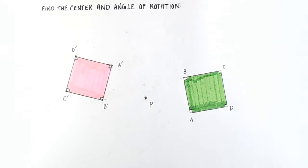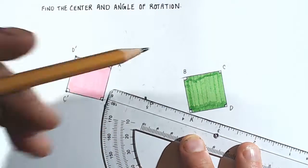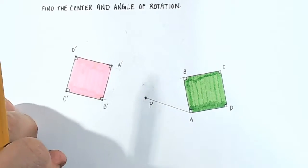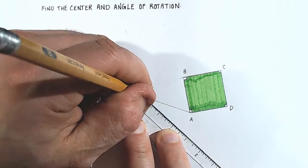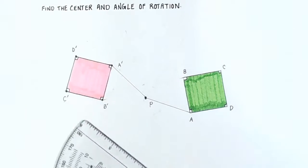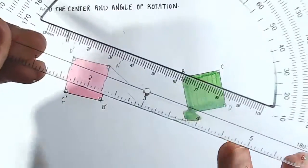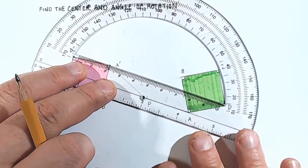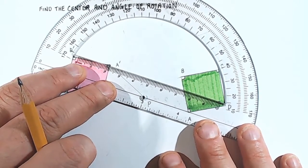And so all we have to do in order to do this is connect point P with point A on a line segment like this. And then we connect point P with point A prime on a line segment like this. And what we're going to do is take our protractor, bring it in, and center this little hole right here above point P and line up our guideline here on this line segment P, A. Be super precise with this.